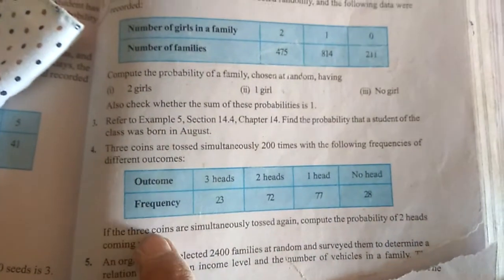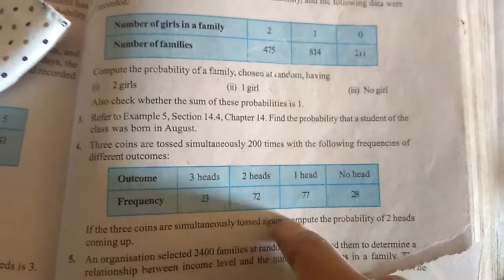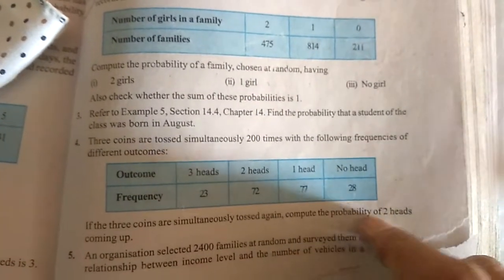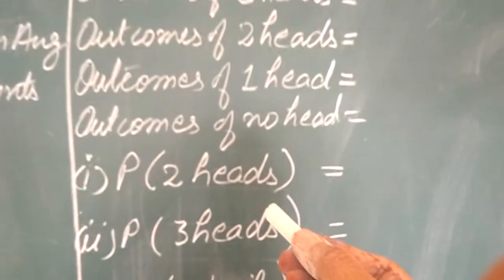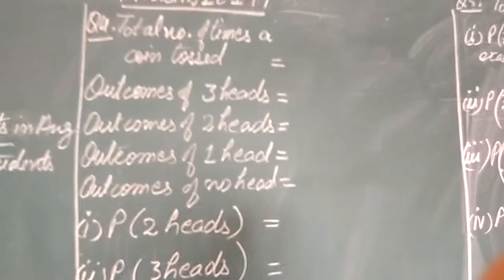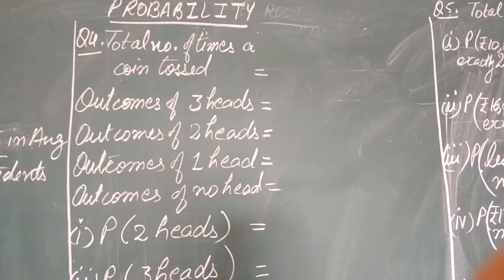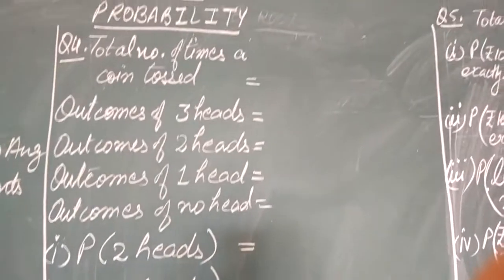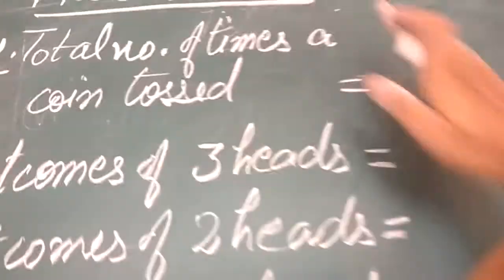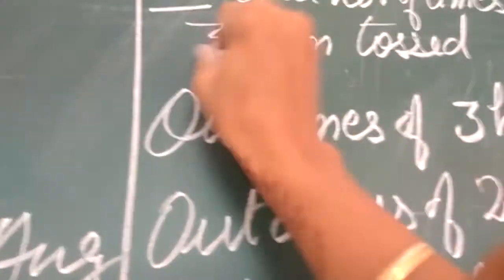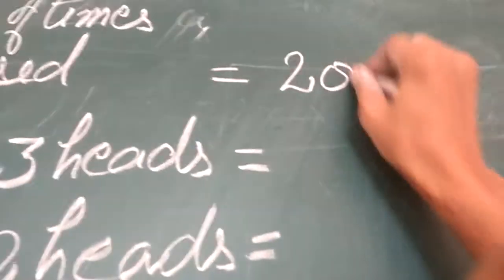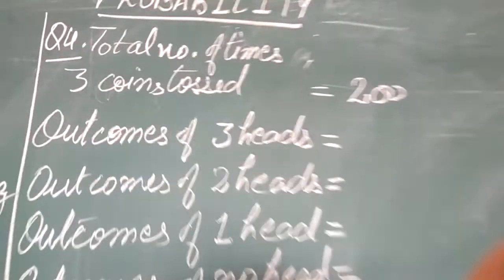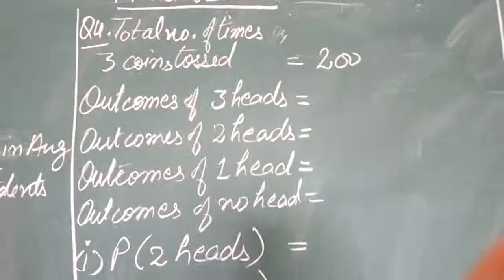If the 3 coins are simultaneously tossed again, we have to compute the probability of 2 heads. First of all, we write the total number of times the 3 coins were tossed — that is 200 times. This is the total and this goes in the denominator.